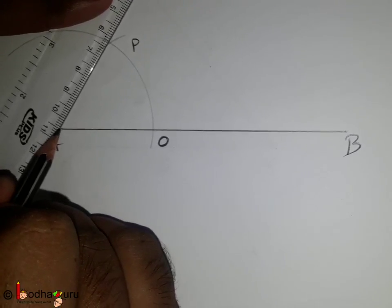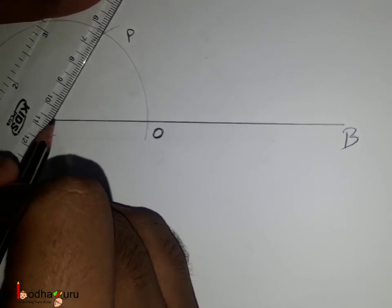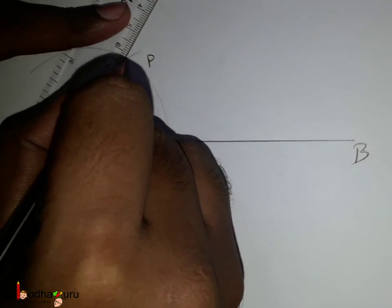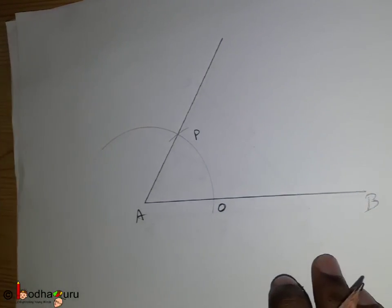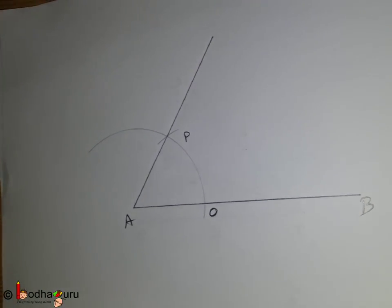If we join point A and point P, we would get an angle of 60 degree at point A. And we say angle BAP is equal to 60 degree.